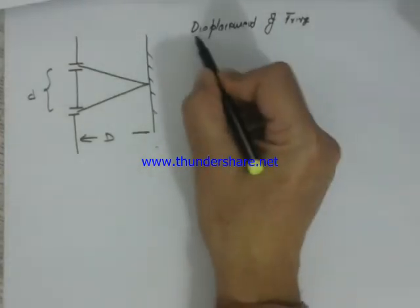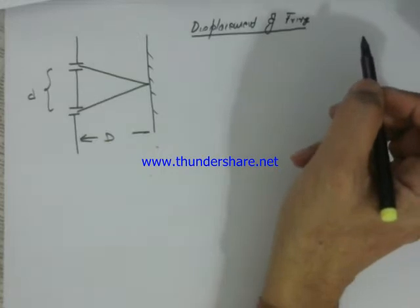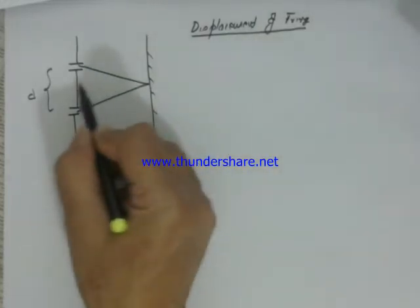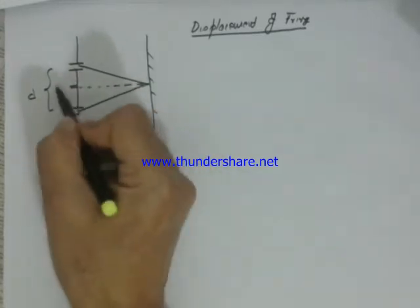In this lecture we will cover the concept of displacement of fringe, that is fringe shift. Before we do that, let us do some basics. We know in Young's double slit experiment we are illuminating these two slits by a common source.